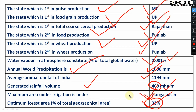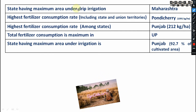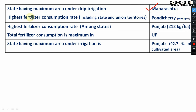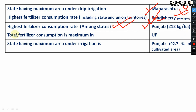The state having maximum area under drip irrigation is Maharashtra. For highest fertilizer consumption rate, if you include both states and Indian territories, it is Puducherry. But among states only, it is Punjab. Also, the KBQ was established for the first time in Puducherry. Total fertilizer consumption is maximum in Uttar Pradesh.